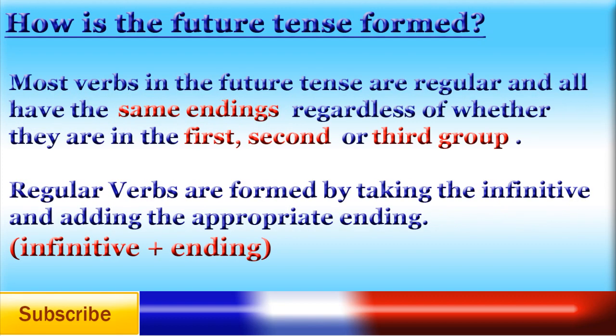How is the future tense formed? Most verbs in the future tense are regular and all have the same endings regardless of whether they are in the first, second, or third group. Regular verbs are formed by taking the infinitive and adding the appropriate ending.